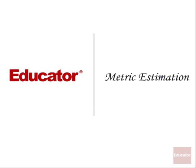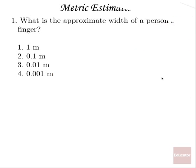So starting with metric estimation, and you can find a link to download it at the bottom of the page, we'll look at number one, what is the approximate width of a person's little finger? Well, a little finger is about one centimeter wide, which would be 0.01 meters.